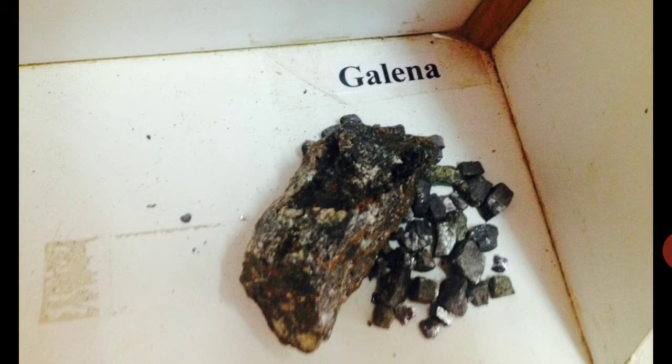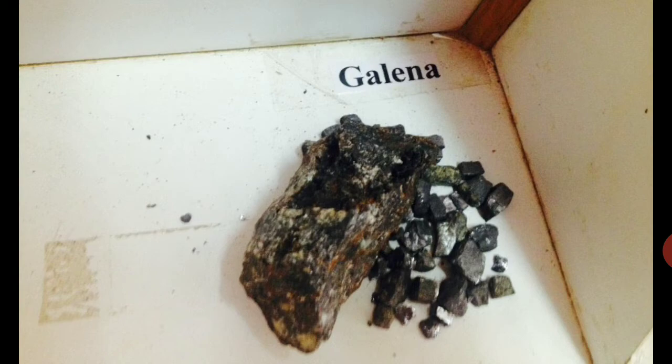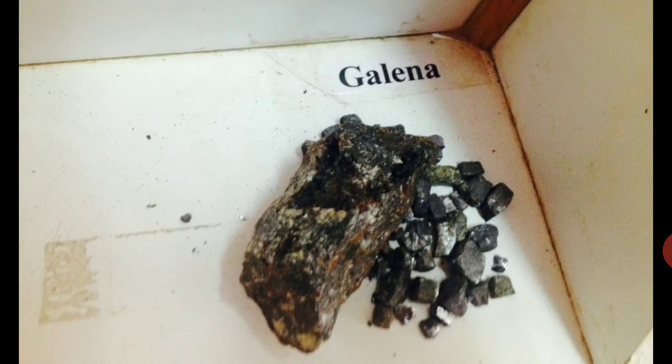Uses: ore of lead, storage batteries, glass glazing, paint, and alloy. So these are the three minerals — Pyrite, Chalcopyrite, and Galena — which come under the sulphide group. Thank you.